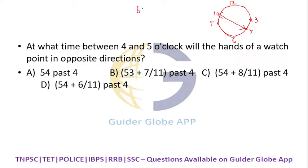The formula is 60 by 55 into m. M means here how many minutes from 12 it should come up.